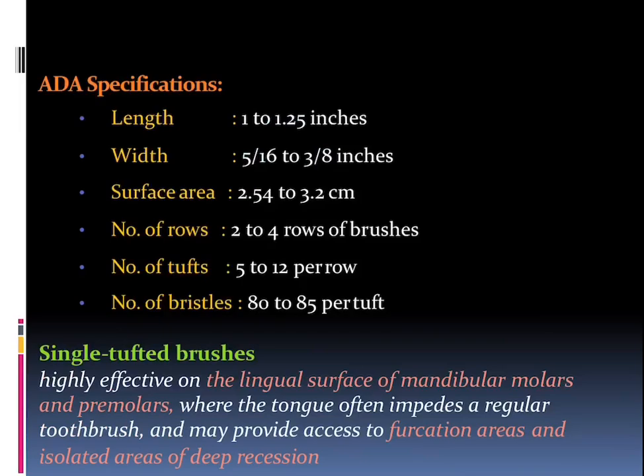Talking about the ADA specifications of a toothbrush overall, the working end should have a length of about 1 to 1.25 inches, the width should be about 5/16 or 3/8 inches, the surface area should be about 2.5 to 3.2 cm, the number of rows should be 2 to 4, the number of tufts per row should be 5 to 12, and the number of bristles should be about 80 to 85 per tuft.